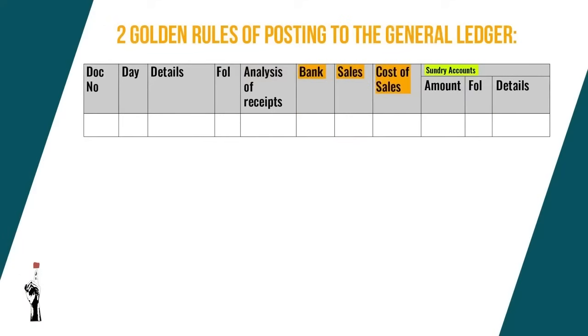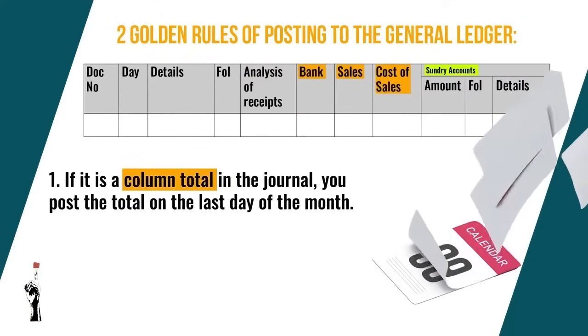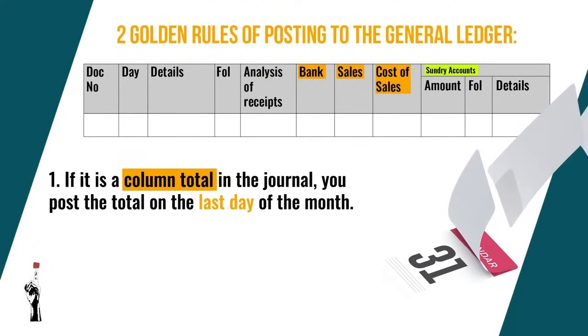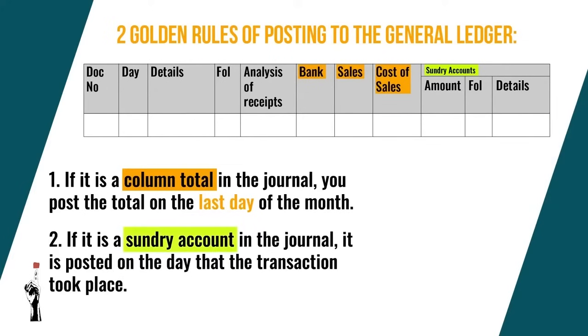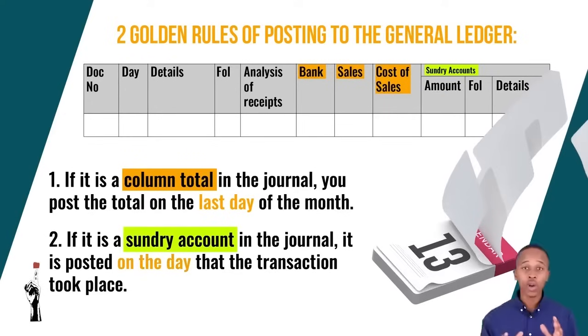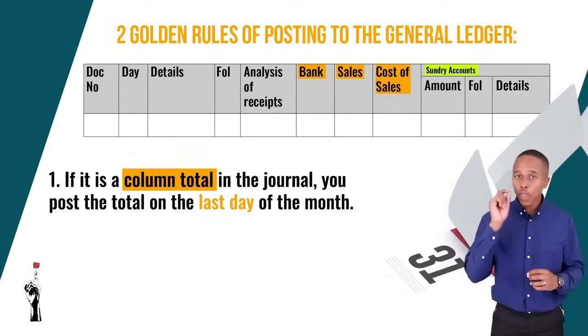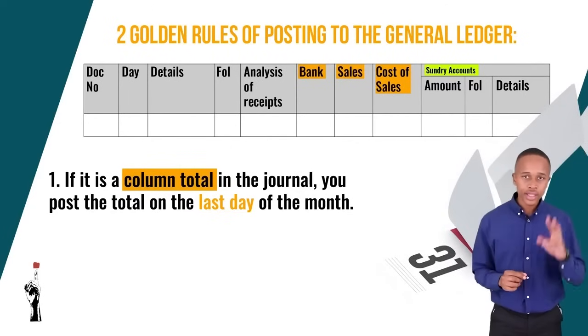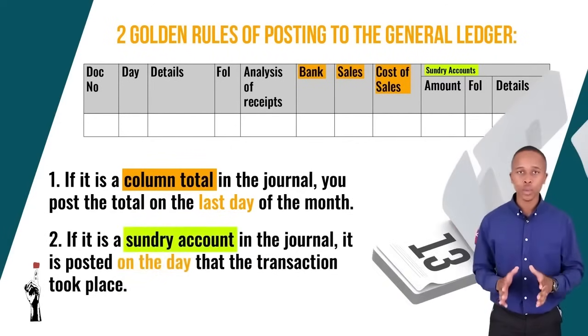There are two golden rules when it comes to the general ledger. Number one: if it is a column total in the journal, you post the total on the last day of the month. Number two: if it is a sundry account in the journal, it is posted on the day that that transaction took place. If you're not comfortable with the theory, do yourself a favor and watch the start of this lesson again before moving on to the practical application.